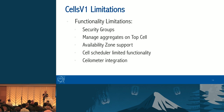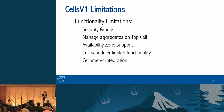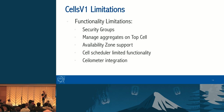However, using cells means we also lose some functionality. For example, security groups are not working with cells. Aggregates and availability zones are a little tricky — I'll show how we set up availability zones later. The cell scheduler is limited with cells. And cell integration is a little bit tricky. These are only some examples.